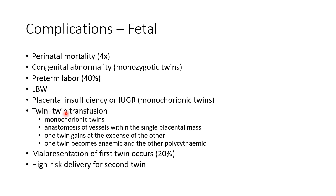Twin-to-twin transfusion syndrome is an important complication of multiple pregnancy. This occurs in monochorionic twins, i.e., when the twins share the same placenta, because of anastomosis of vessels within the single placental mass. In twin-to-twin transfusion syndrome, one twin gains at the expense of the other; therefore one twin becomes anemic and the other becomes polycythemic. Other fetal complications include malpresentation of the first twin, which occurs in 20% of cases, and high-risk delivery for the second twin.